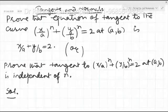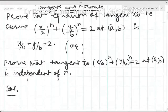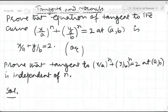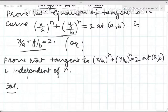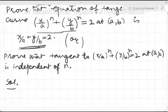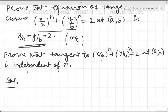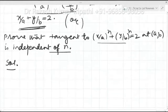We have a very important question on tangents and normals in which we are supposed to prove the equation of tangent to this curve (x/a)^n + (y/b)^n = 2 at point (a, b) is x/a + y/b = 2. Clearly it is independent of n, meaning the equation of the tangent we find does not contain n. So let's try to find its tangent at (a, b).